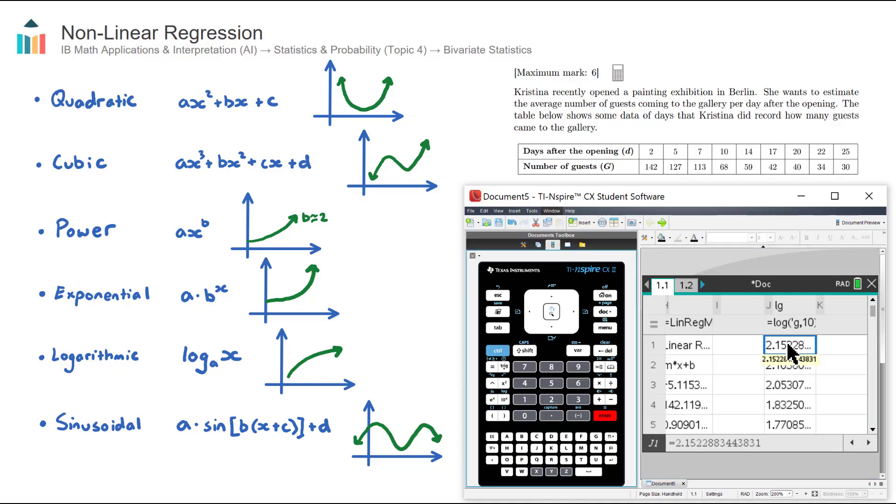We now have the log of all of these number of guests. So our new data set is actually two days after opening and the log of G, which is 2.15. Now you may be wondering, well, what's the point of that? And let's see this now.